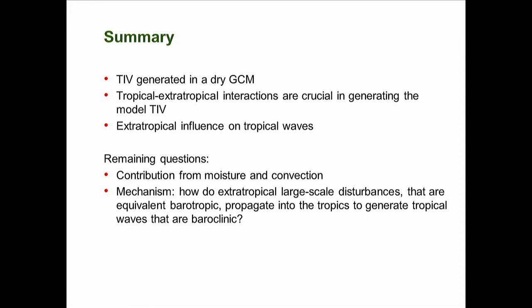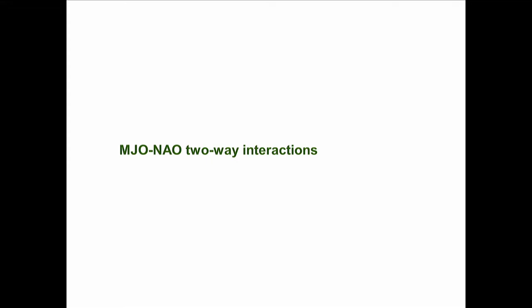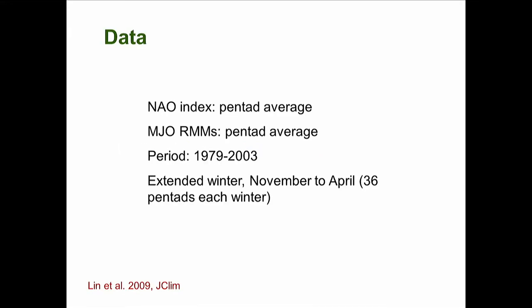Now I'll switch to MJO and NAO interactions. This is based on an earlier study. We use the NAO index as a pentad average and the MJO index as the Wheeler-Hendon index, also pentad-averaged, to look at the intra-seasonal variation and how MJO and NAO are correlated and connected.